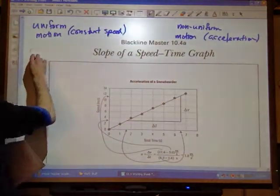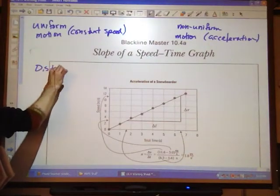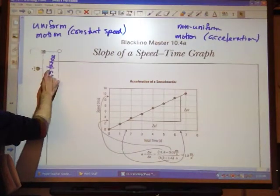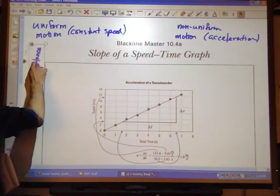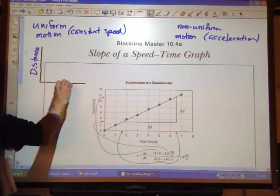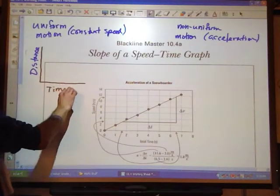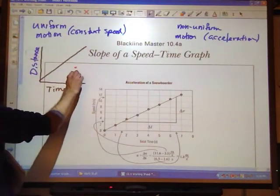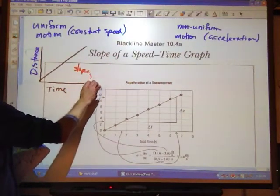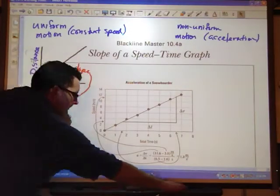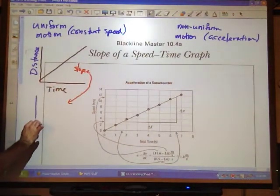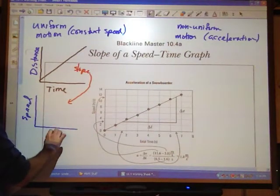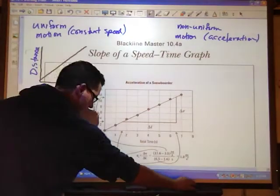Now the interesting thing with this one is that we would have had a distance-time graph. So the distance-time graph for uniform motion is simply a straight line. And then as we saw before, if we figure out the slope of that line, we would get a constant speed value.